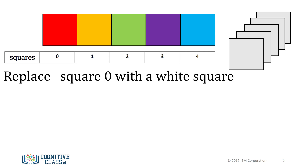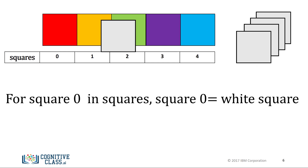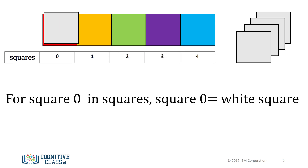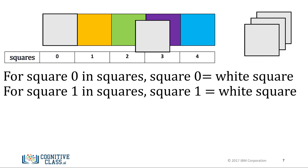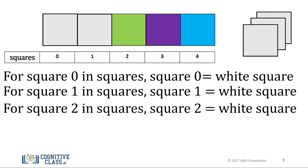If we wanted to tell someone to replace square 0 with a white square, we would say: for square 0 in squares, square 0 equals white square. Similarly, for the next square, we can say: for square 1 in squares, square 1 equals white square.